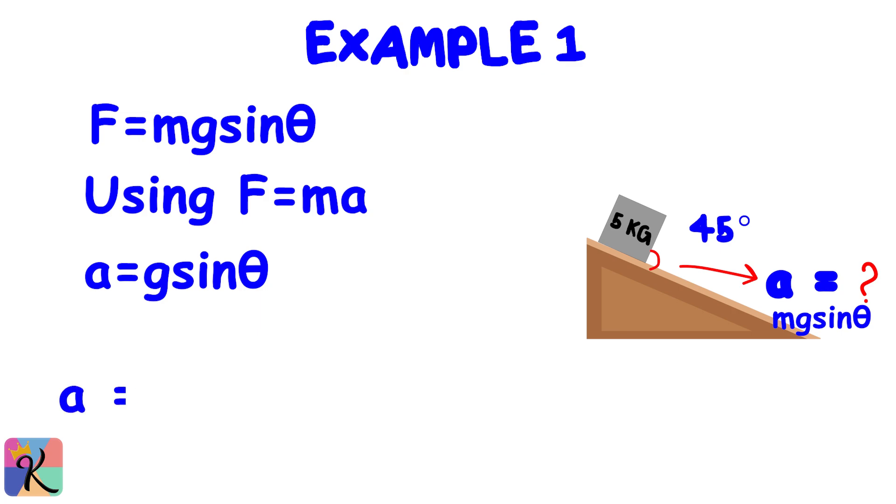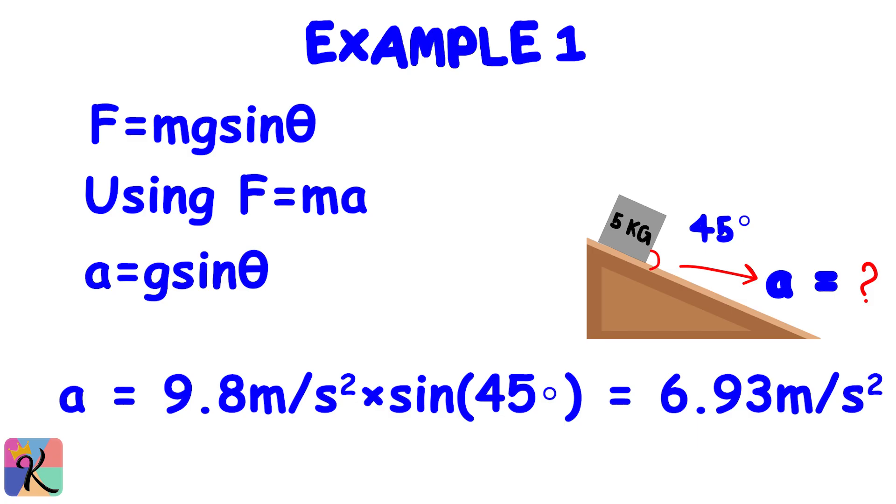Plugging in the numbers, a = 9.8 meters per second squared times sine of 45 degrees, which equals approximately 6.93 meters per second squared. That's the block's acceleration down the ramp.